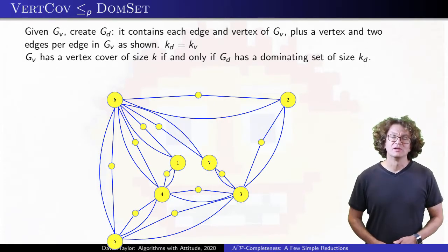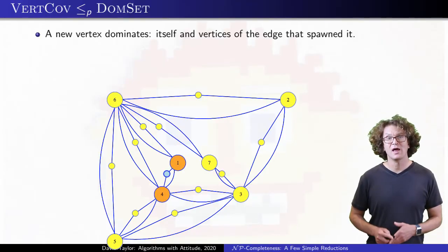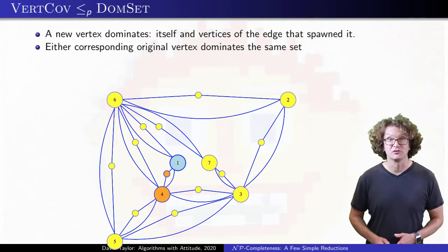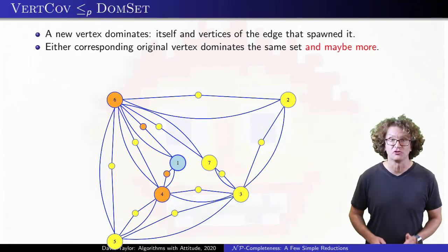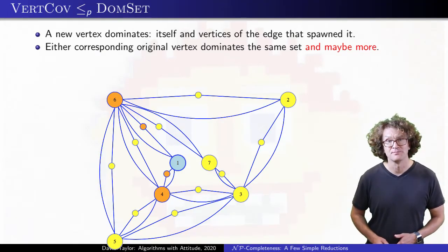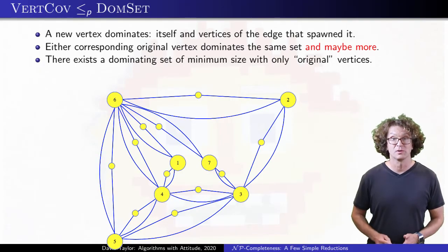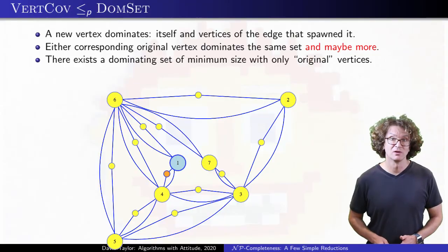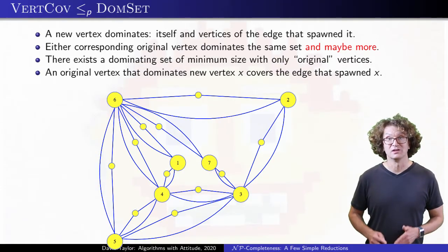Let's think about these new vertices in the new dominating set graph. Each one only dominates itself and the two vertices that created it, so that first vertex we added dominates only itself, 1, and 4. Meanwhile, both 1 and 4 have to dominate those same three vertices, because by construction each is adjacent to the other two. But 1 and 4 might also be adjacent to other stuff, so each might dominate more — each dominates a superset of the stuff dominated by the new vertex. Because of that, we can be sure that there is a minimum sized dominating set that only contains original vertices, because we can always replace a new vertex with one of the originals.